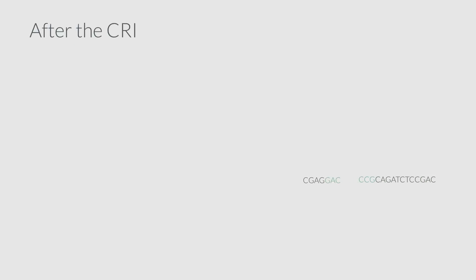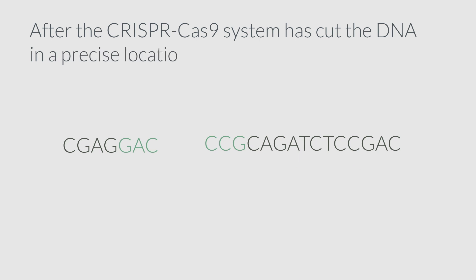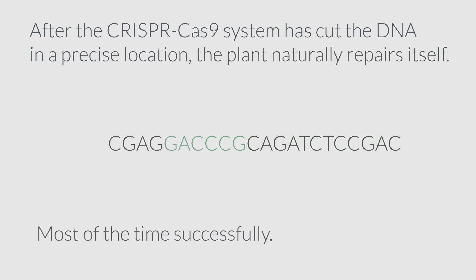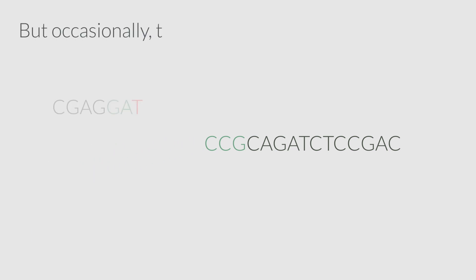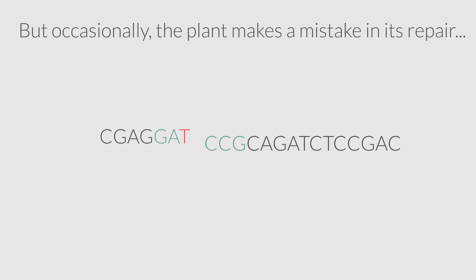After the CRISPR-Cas9 system has cut the DNA in a precise location, the plant naturally repairs itself, most of the time successfully. But occasionally, the plant makes a mistake in its repair, generating a mutation.